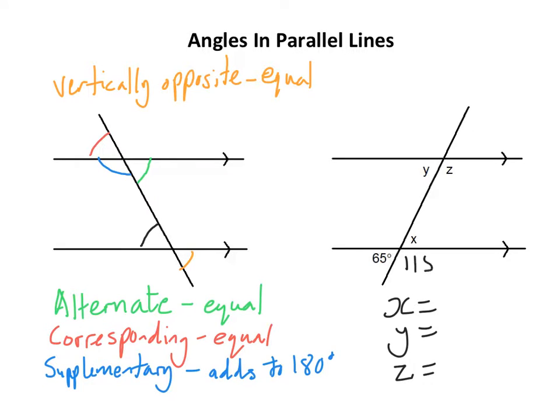So essentially if I've just got that sort of situation, my answers are either going to be 65 or 115. They're not going to be any different. You'll be a little bit careful in some situations, but initially with this one transversal—that's a line that cuts the parallel lines.